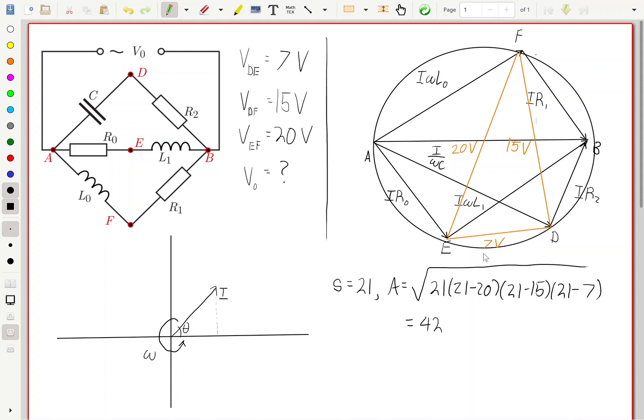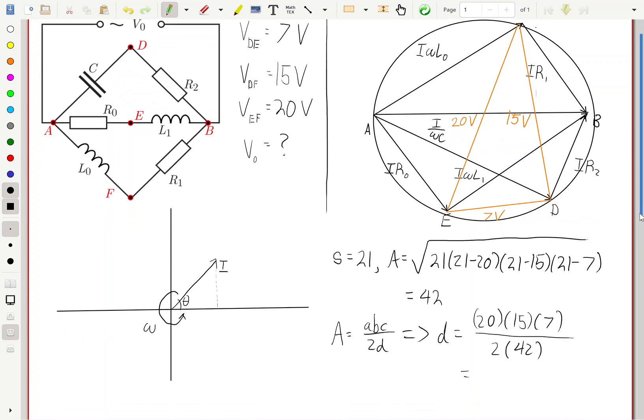I'm dropping the units. But we can also figure out the area of a triangle if we know the diameter of the circumcircle that it is inscribed in. And that formula is given by A equals ABC over 2D, where ABC are the sides and D is the diameter of the circumcircle. In this scenario, we already know the area of this triangle, and we just need to figure out D the length from A to B, which represents the voltage difference from A to B or V0. So rearranging, we get D is equal to A times B times C, which is 7 times 15 times 20, over 2 times the area, 42, which will give us 25.